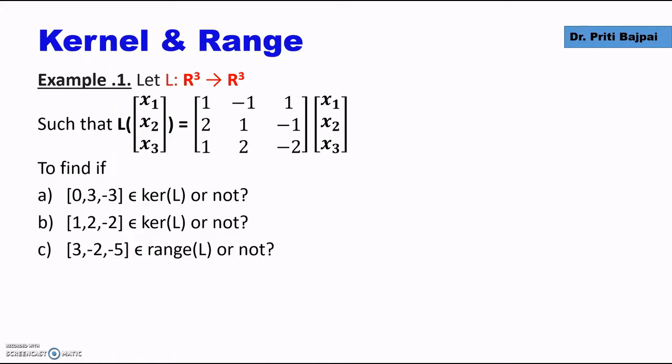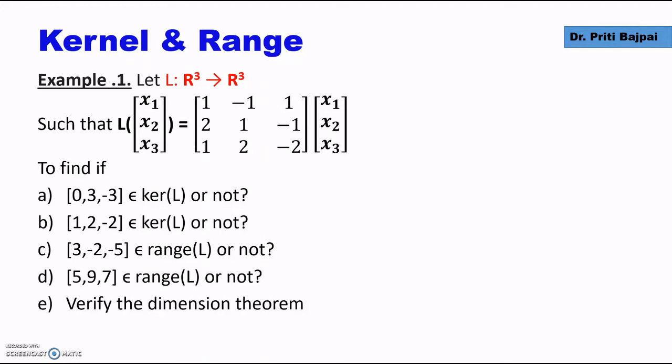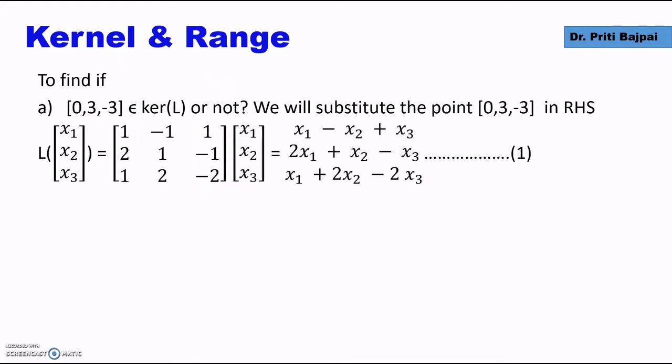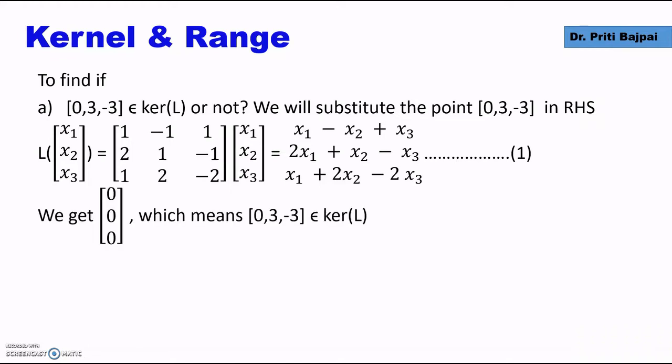The right-hand side is of course the image. Now if we want to find whether a particular vector (0, 3, -3) belongs to the kernel or not, we will check by equating L(x₁, x₂, x₃) equal to zero. We will also check and verify the dimension theorem. So to start with, let's take the vector (0, 3, -3).